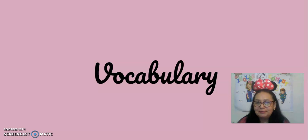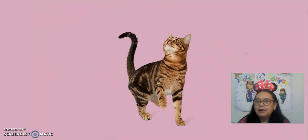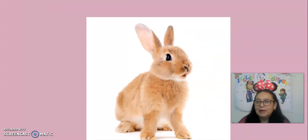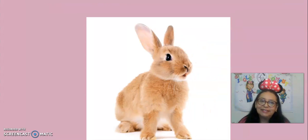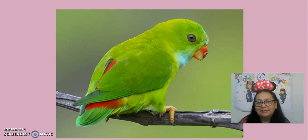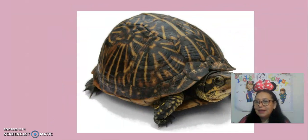Vocabulary. What do you see? I see a cat. What do you see? I see a duck. What do you see? I see a rabbit. What do you see? I see a parrot. What do you see? I see a turtle.